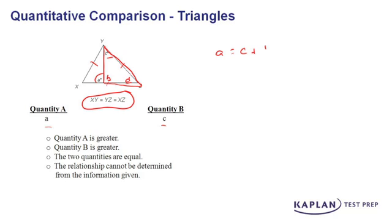A is going to equal the value of C plus D. Well, now take a look at our two quantities. If quantity A is the value of A and quantity B is the value of C, we know A is equal to something plus C.